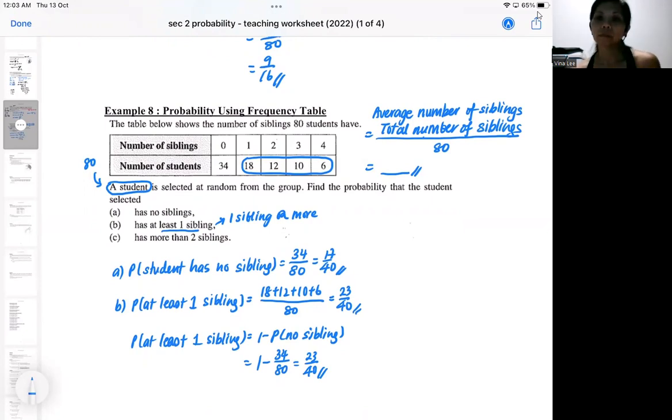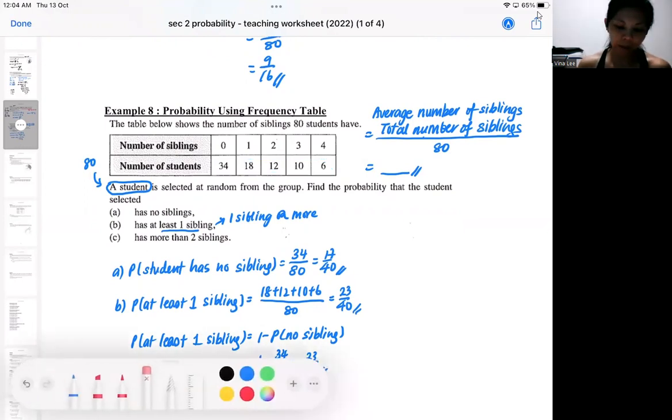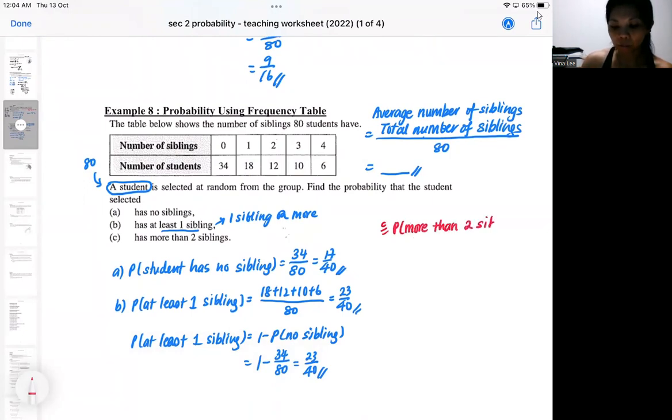So at least one sibling, it can be one, two, three, four. So instead of adding up the one, two, three, four, I might as well take the opposite. So that's another approach. The next one, sometimes also will be a bit tricky. So the next one is more than two. So when we say more than two, sometimes the concern will be, so it's two siblings included. So no, two siblings is not included. So in this case, more than two means is three siblings or four siblings. So it's just these two categories. So this kind of question can be a bit tricky. Please read for information. Make sure you can interpret the table first before you try answering.